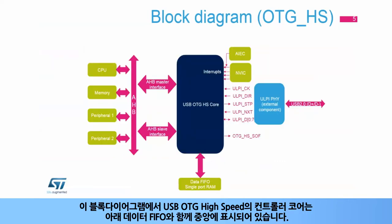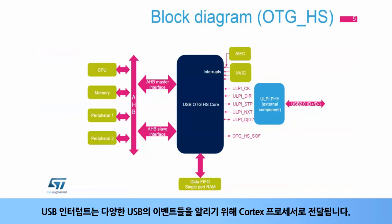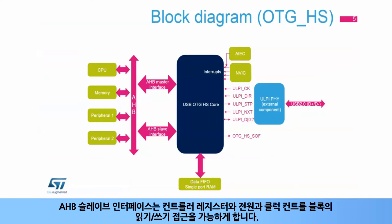In this block diagram, the USB OTG high-speed controller core is shown in the center with its data FIFOs below. The PHY, on its right side, handles the analog signal levels, including many specific level detections relating to on-the-go and battery charger detection functions. The USB interrupt goes to the Cortex processor to signal various USB events. The AHB slave interface enables read-write access of the controller registers and the power and clock control block.